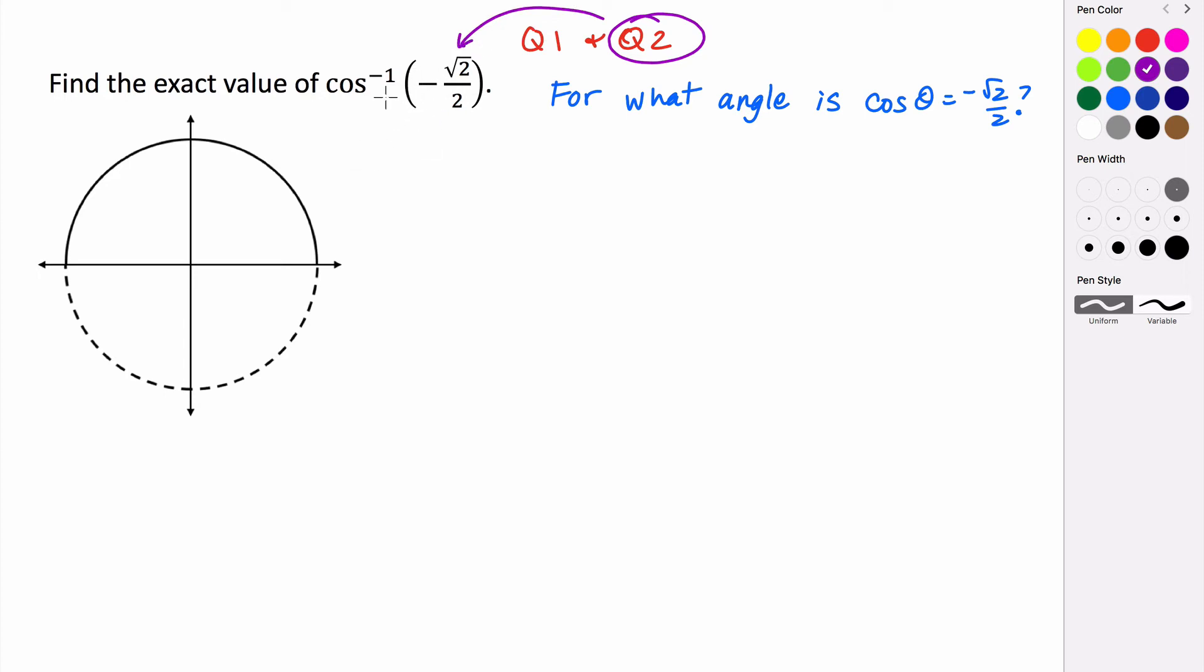So every time you're evaluating an inverse cosine that has a negative inside your argument, it's going to give you an angle in quadrant 2. So angles in quadrant 2.